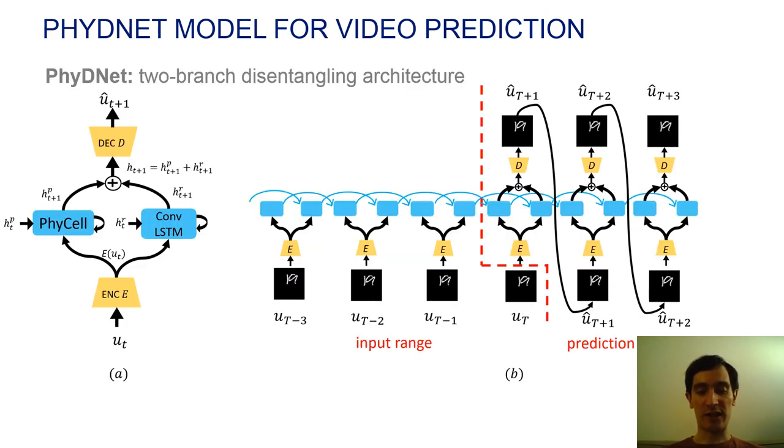PhyDNet is a two-branch architecture that disentangles physical from residual dynamics in latent space. Physics is learned with a recurrent neural network cell called PhyCell, whereas the complement is learned by a data-driven ConvLSTM. When unfolded in time, this forms a sequence-to-sequence architecture for video prediction.